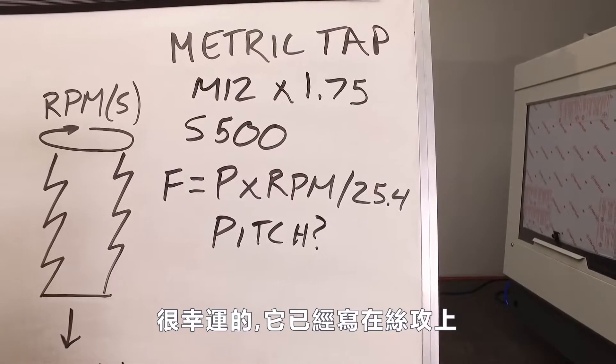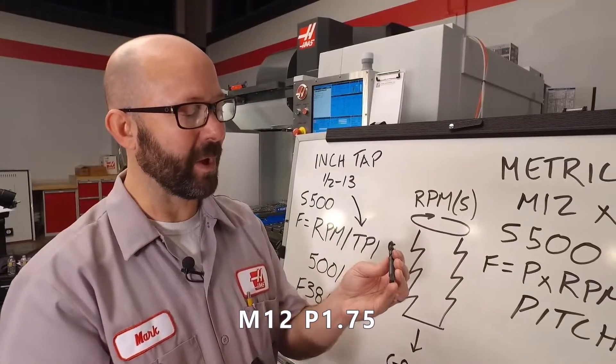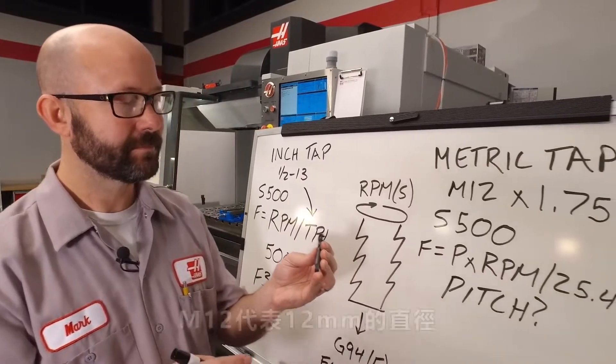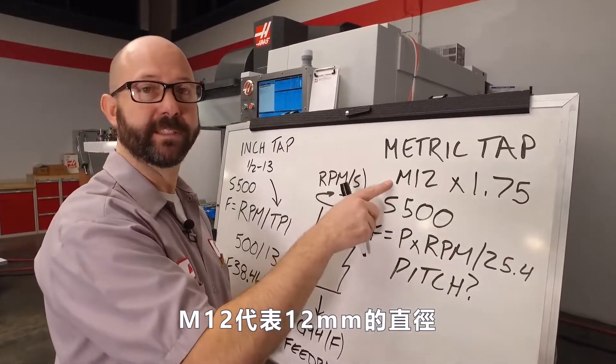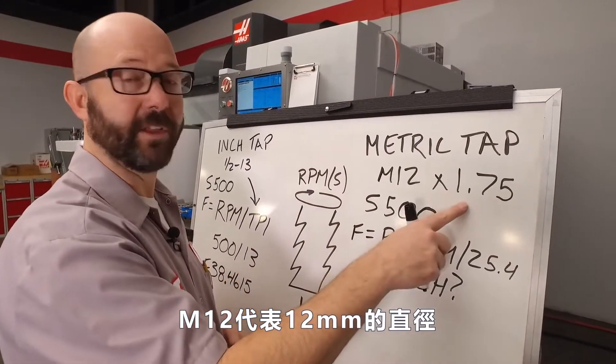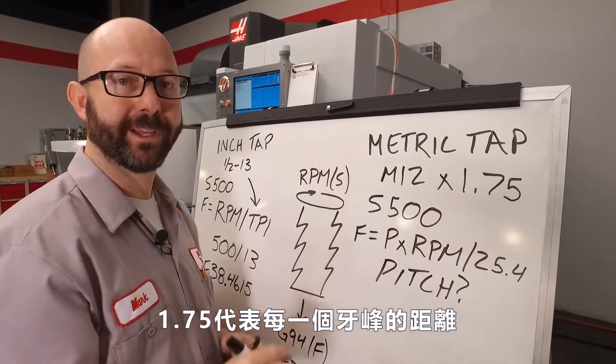Now, where do we get our pitch from? Lucky for me, it's actually written on my tap. M12 by 1.75. That M12 is the basic diameter. And the 1.75 is our pitch in millimeters.